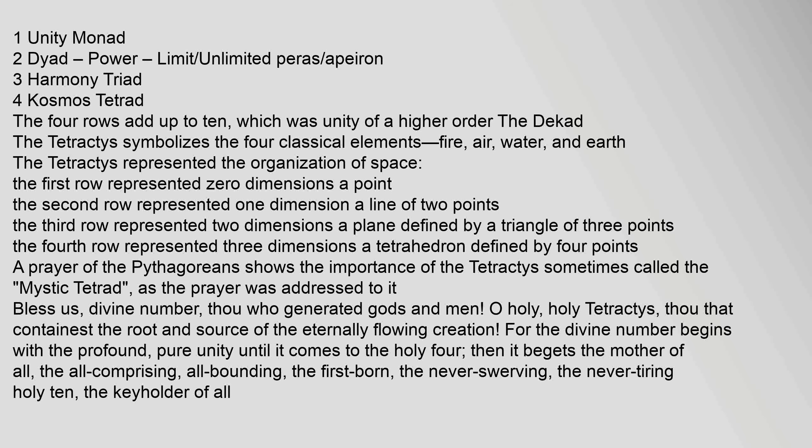The fourth row represented three dimensions — a tetrahedron defined by four points. A prayer of the Pythagoreans shows the importance of the Tetractys, sometimes called the Mystic Tetrad, as the prayer was addressed to it: 'Blessest Divine Number, Thou who generated gods and men. O Holy, Holy Tetractys, Thou that containest the root and source of the eternally flowing creation.'